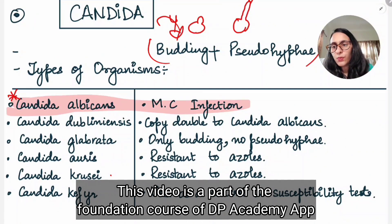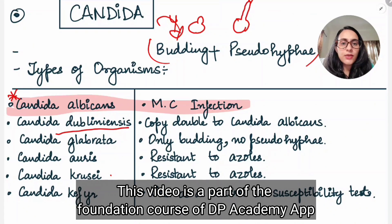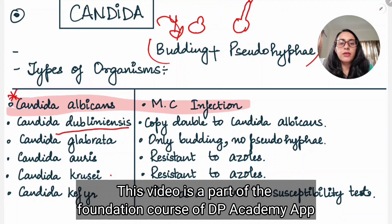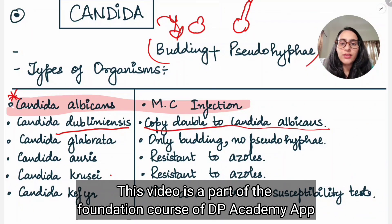The next one is Candida dubliniensis. Dubliniensis is the double copy — it is going to mimic Candida albicans, but there are some differentiating features that we will talk about in this lecture.